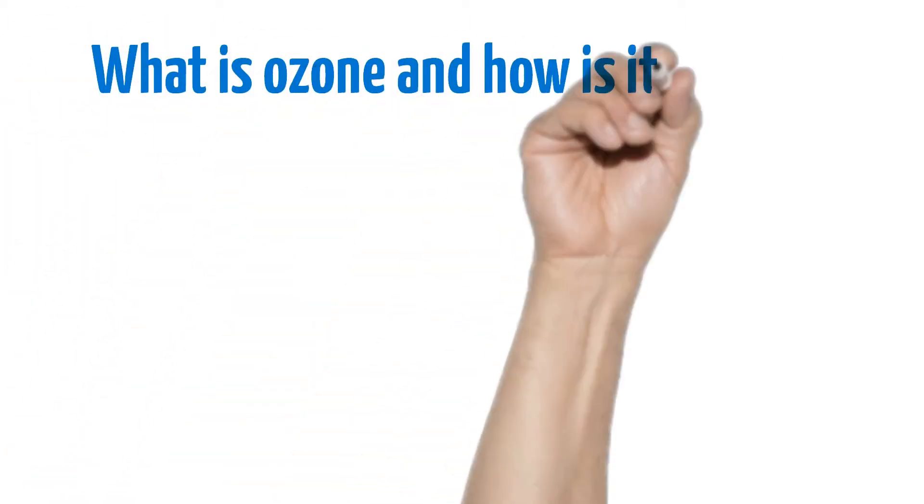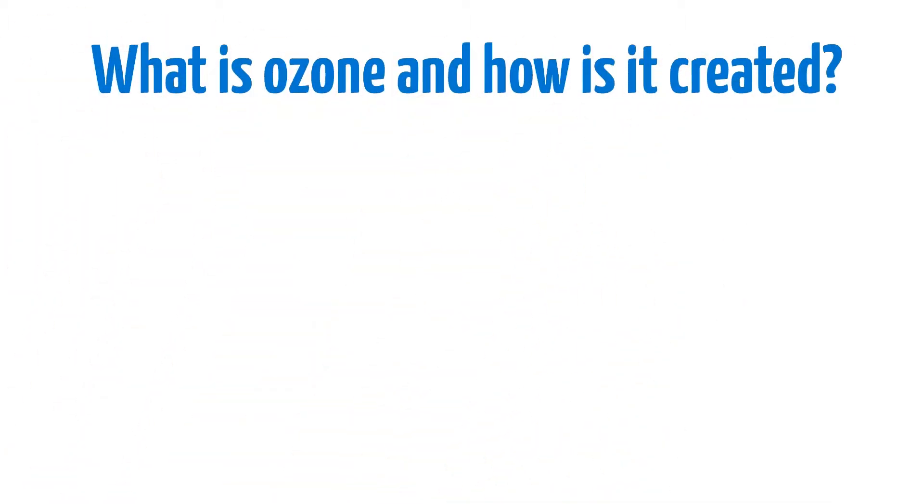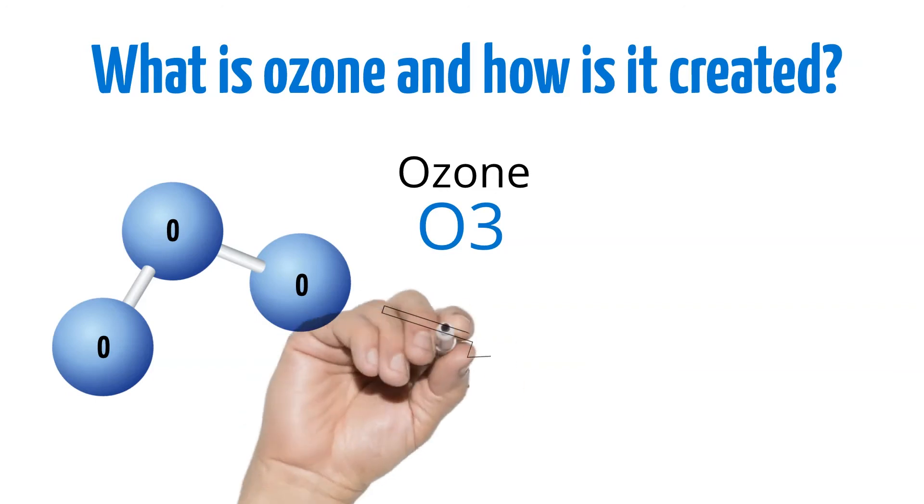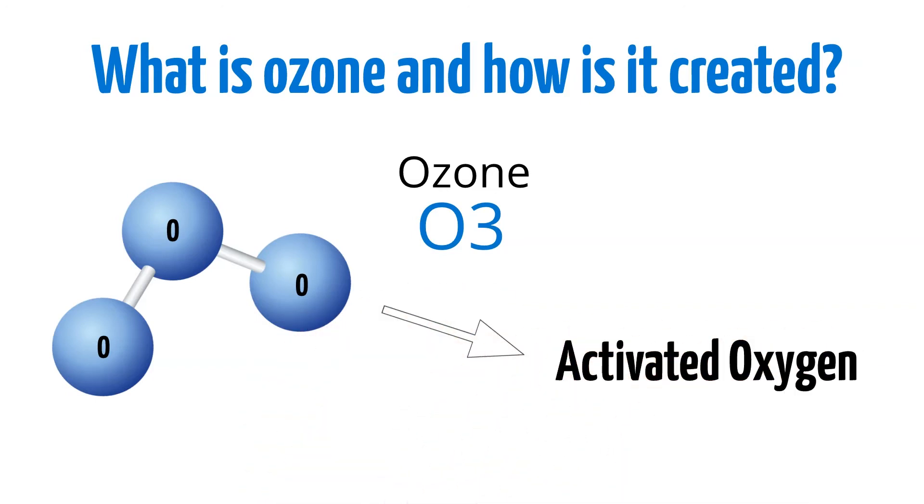First, what is ozone and how is it created? Ozone is also known as O3 and is created by combining three oxygen atoms. This is why it is often referred to as activated oxygen.